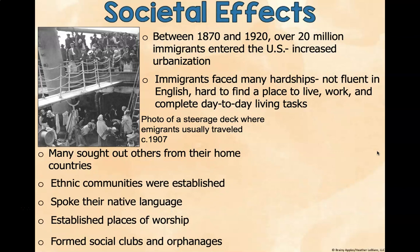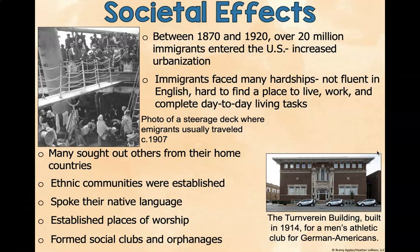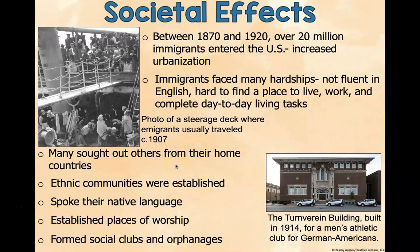Between 1870 and 1920, over 20 million immigrants entered the United States, increasing urbanization. Immigrants faced many hardships — most were not fluent in English and had to find a place to live, work, and complete day-to-day tasks. Many sought out others from their home countries. Ethnic communities were established that spoke their native language, with places of worship, social clubs, and orphanages. This is the Turnverin building, built in 1914, which was a men's club for German Americans.